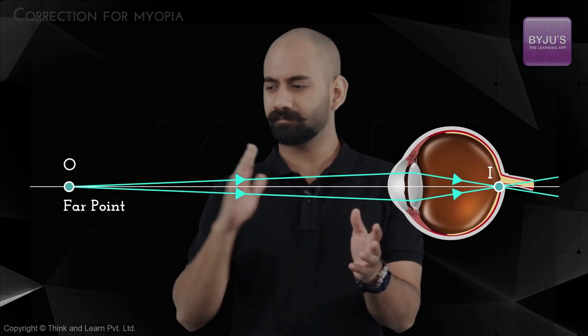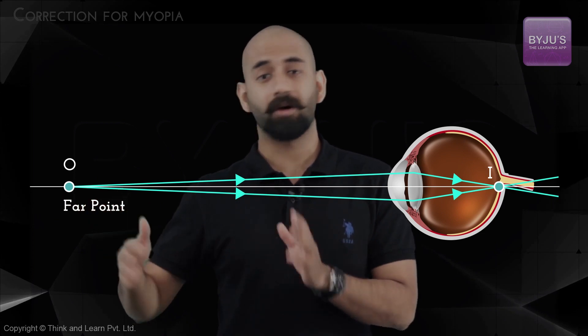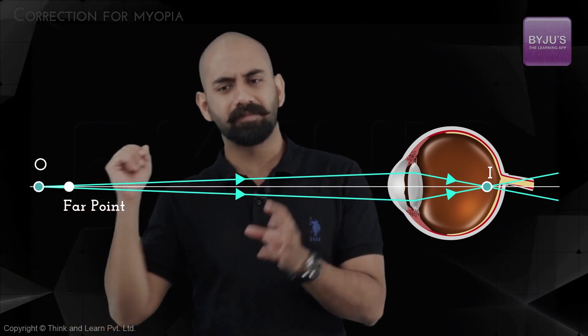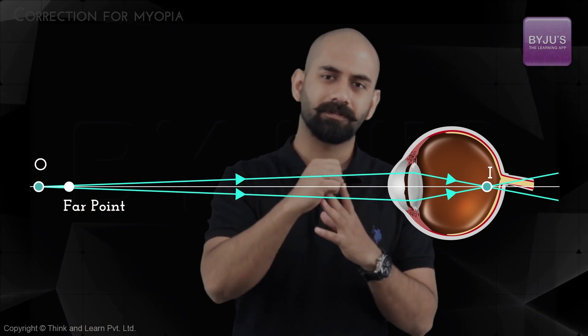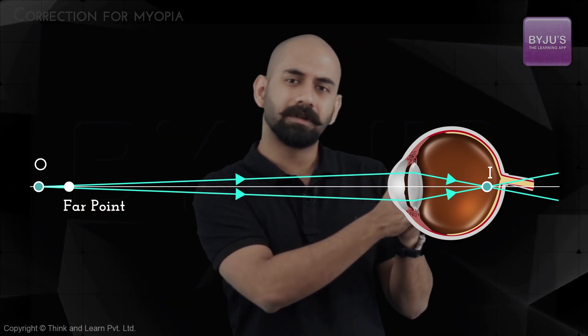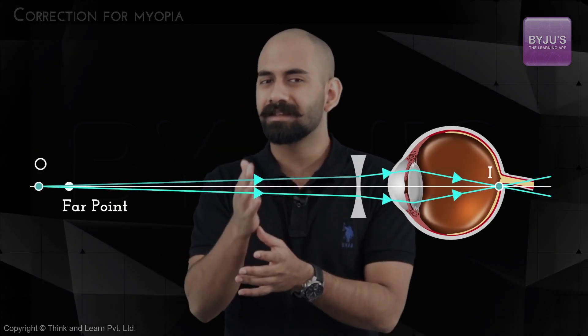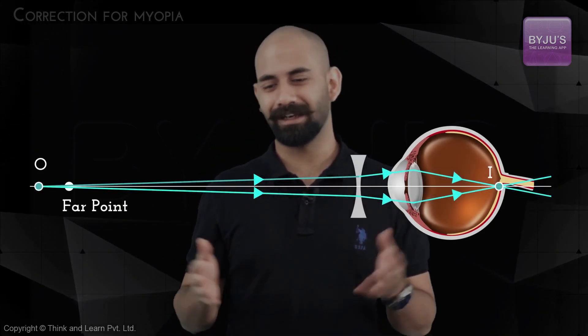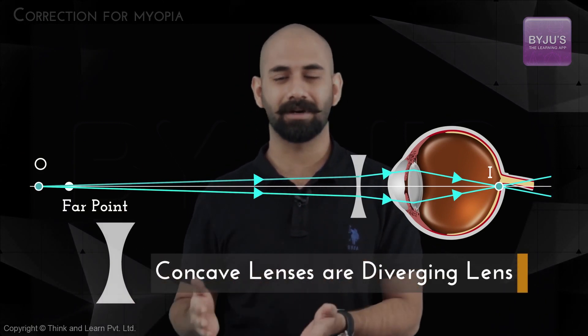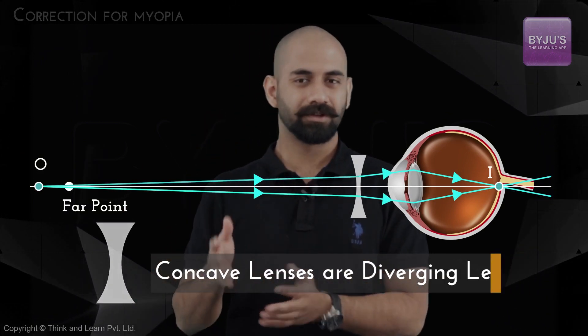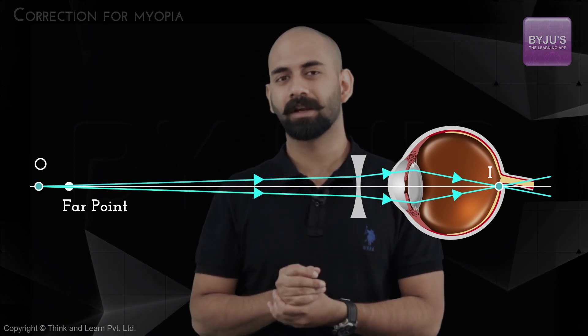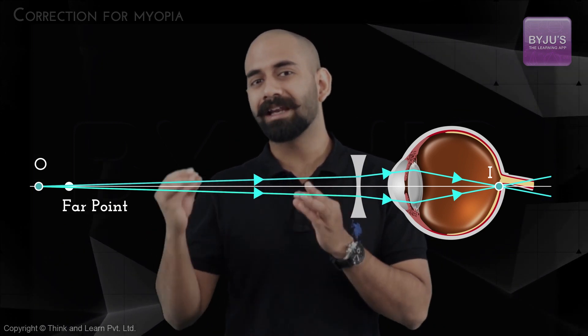So how do you correct myopia? The problem is that for an object at or beyond the far point, the image is being formed in front of the retina. The solution is to place a diverging lens in front of the eye — it doesn't have to be a concave lens specifically, just any diverging lens.